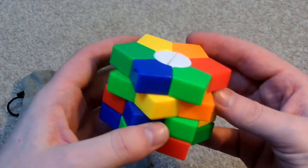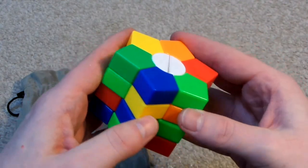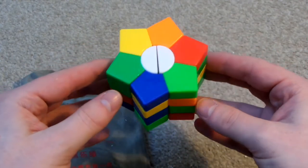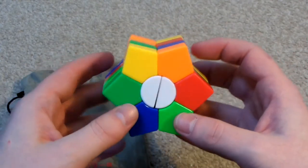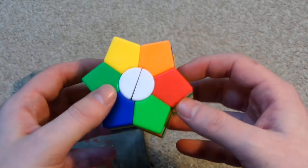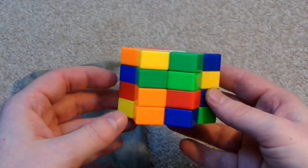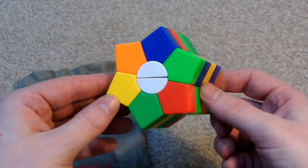I guess maybe that's scrambled enough really. So yeah so that is the QJ maybe, 4-layer super square one star. I think it's a really nice looking puzzle.